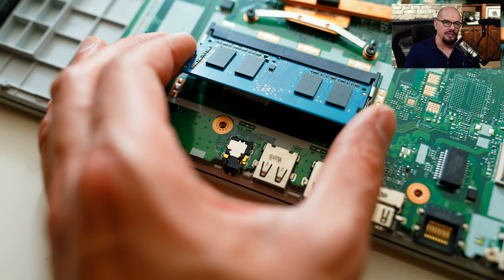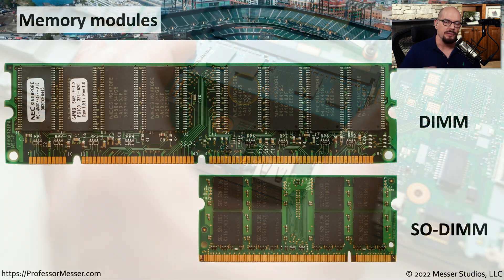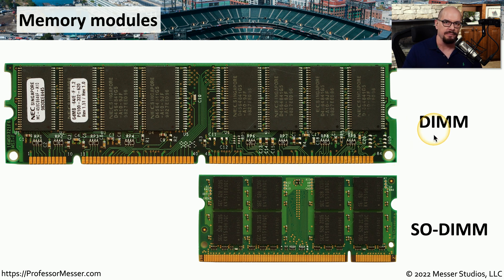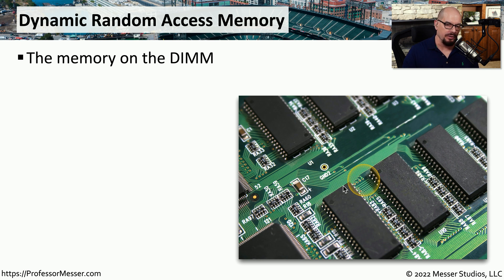Here's a view of the installation of a SO-DIMM. You can see these are a lot smaller than full-size DIMMs. Just like the other DIMMs, they fit into a slot and then push down and lock in place. Here's a picture of a DIMM and a SO-DIMM next to each other — to scale — and you can see the SO-DIMM is really about half the width of a standard DIMM. On the memory module itself, you'll notice black components — that is the random access memory, or RAM, located on those modules.